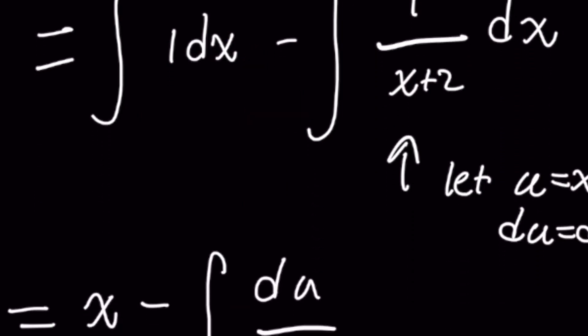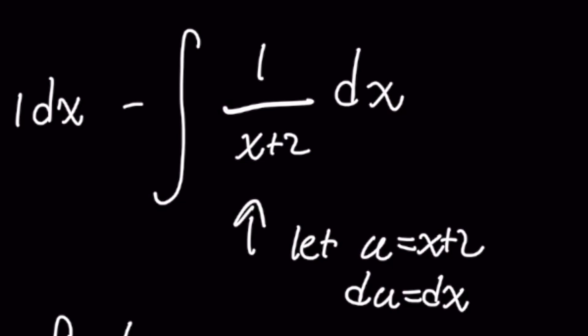Now keep in mind that we know the integral of 1 over x is the natural log of the absolute value of x plus c. And this looks very similar to a dx over x problem. The only difference, of course, is that the denominator is x plus 2 rather than just x. But that's simple. We can just use a u substitution, right?